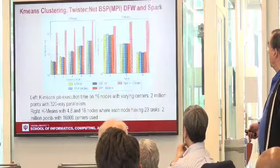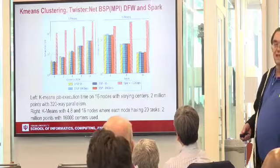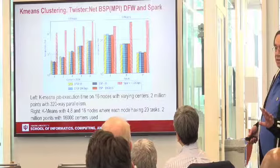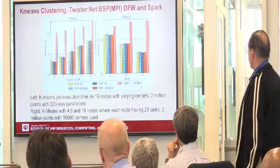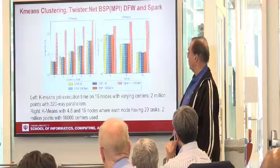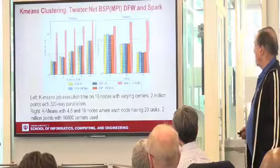Here are the standard results showing we always get better performance using data flow in Twister versus data flow in Spark. We also compare MPI. This compares Spark — which is the worst — with bulk synchronous processing and data flow. Data flow is somewhat slower than bulk synchronous processing but not by much, and you get a lot of advantages with data flow.